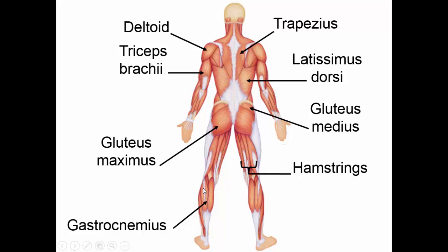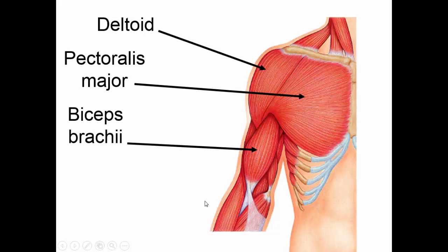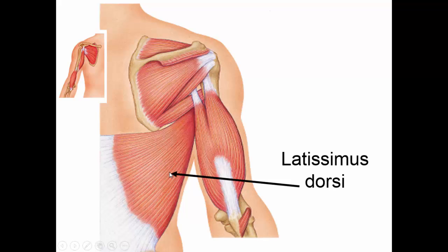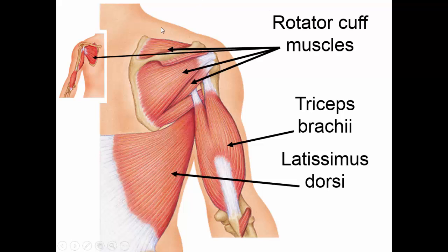Here's the gastrocnemius seen from the back — you can see how it's a very large, fleshy muscle. Here's the deltoid and the pectoralis, and there's the biceps brachii. Deep to the biceps brachii is a smaller muscle called the brachialis, which assists the biceps brachii in flexing your arm. Here's the latissimus dorsi coming around the side, and here's the triceps brachii on the back of your arm. There's a group of muscles attached to your scapula and to the top of your humerus known as the rotator cuff muscles — there are four of them, three on the back side of the scapula and one on the underside. These all help hold your humerus into your shoulder joint and help you rotate your arm.